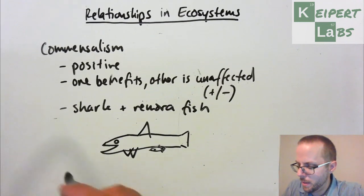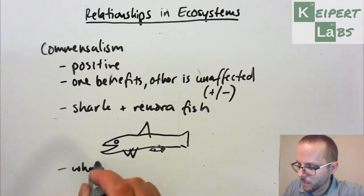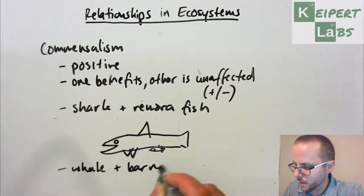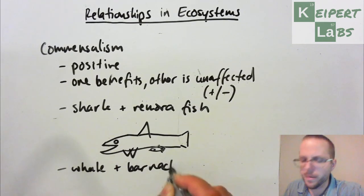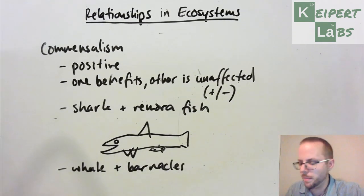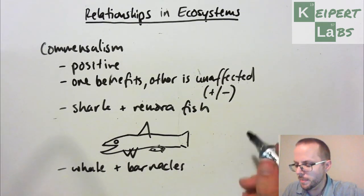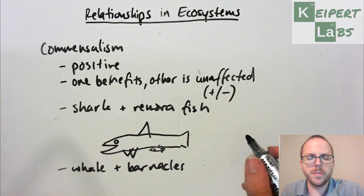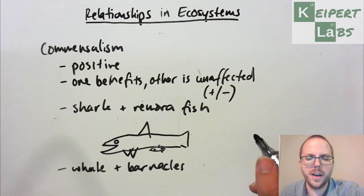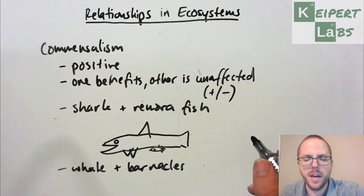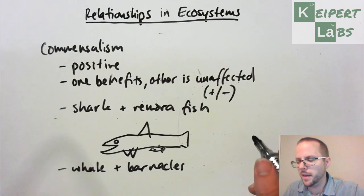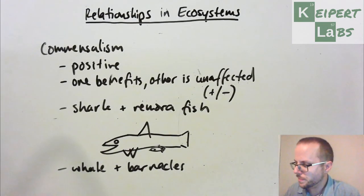Another example is a whale and barnacles that you might often see around the mouth of a humpback whale. They attach on and there's a plentiful supply of food for the barnacles. The whale is otherwise unharmed and unaffected — it doesn't damage it in any way, but also doesn't benefit it.